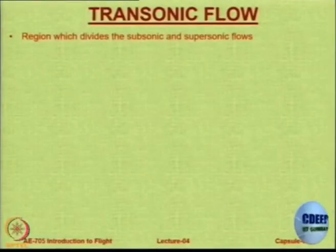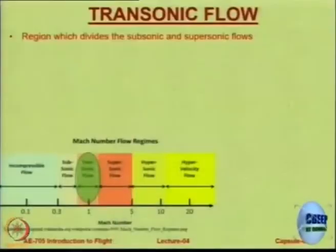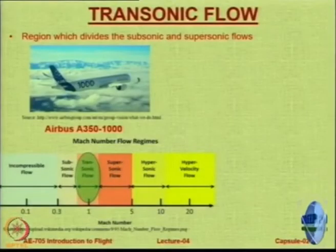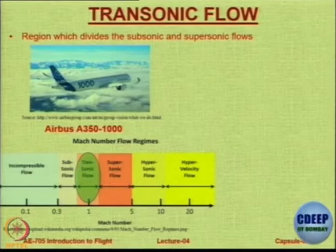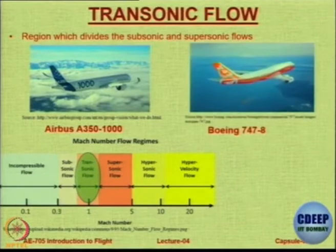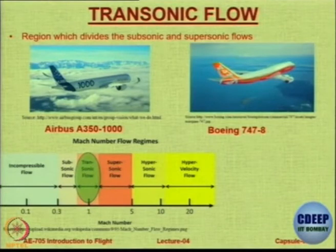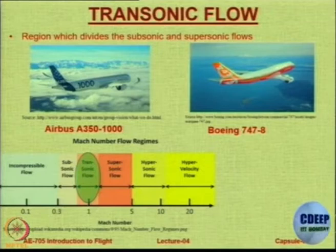It is the region that divides the flow between subsonic and supersonic. The aircraft is flying at transonic speed, Mach number 0.8, but the acceleration of the flow over the wing has led the Mach number to approach the sonic value. Most aircraft in which we fly long distances — for example, Airbus A350 or Boeing 747 — they all operate in transonic flow regimes. The typical cruise Mach number will be 0.8 for these aircraft.